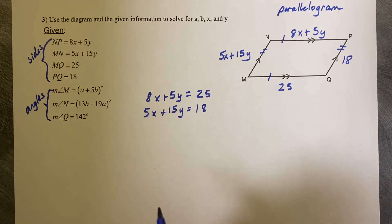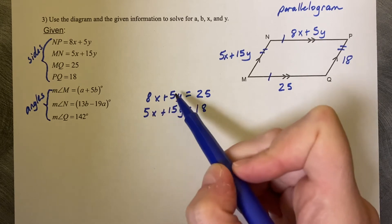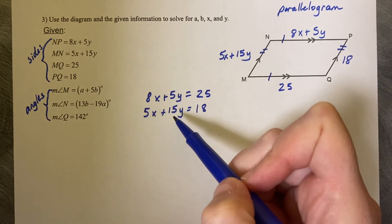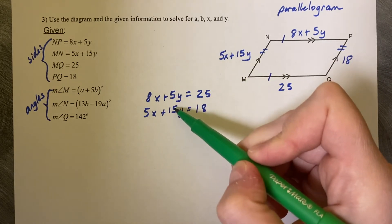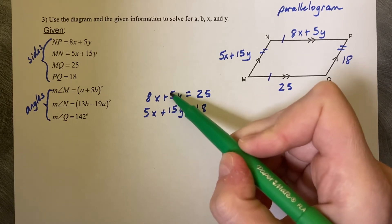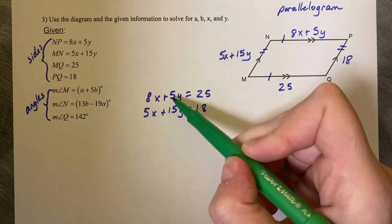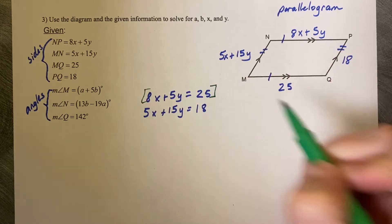It's set up for elimination but nothing eliminates right now. 8 plus 5 doesn't go to 0, 5 plus 15 doesn't go to 0. So we need to fix this so that we have a 0 pair. 5 and 15 seem more friendly because 5 is a factor of 15. So I would like to turn this 5 into a 15 but not just a regular 15. It would be better if it turned into a negative 15.